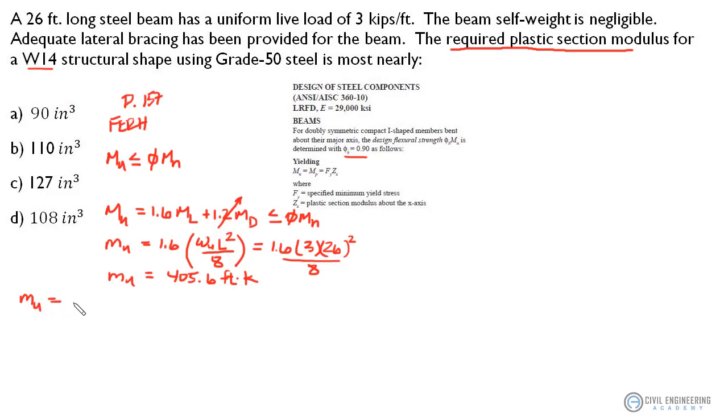To do that let's use this relationship right here and we're going to say that M sub U, we're going to just set that equal to the nominal strength which is M sub N times the strength factor, the resistance factor. And we've been told in this formula here that M sub N equals the plastic moment which equals the yield strength times the plastic section modulus.